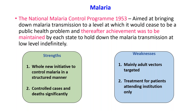The NMCP had certain strengths and weaknesses. Its strength was that it was a whole new initiative to control malaria in a structured manner and it significantly controlled cases and deaths. However, weaknesses included that mainly adult vectors were targeted and treatment was available only for patients attending institutions, not reaching those who did not report to healthcare facilities.